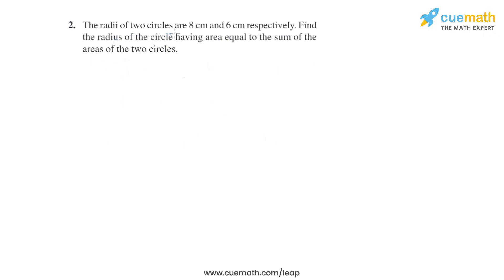Question 2 of this exercise says that the radii of two circles are 8 centimeters and 6 centimeters respectively. Find the radius of the circle having area equal to the sum of the areas of the two circles. So basically, two radii are given in this question.